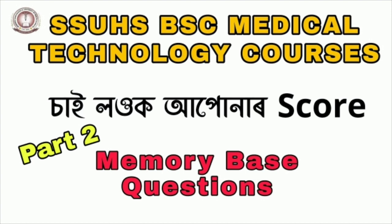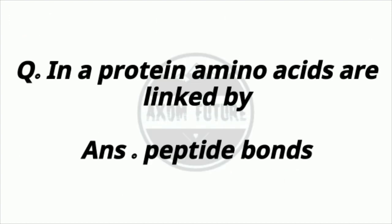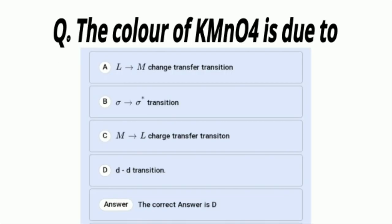Question 1: In a protein, amino acids are linked by peptide bonds. Question 2: The color of KMnO4 — this is a question on the peptide family and the color of potassium permanganate (KMnO4).